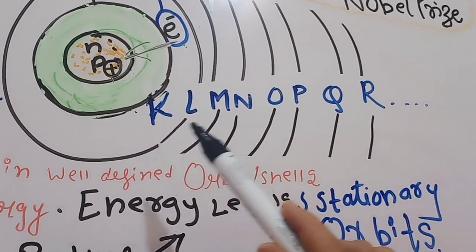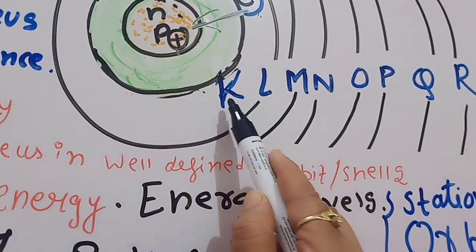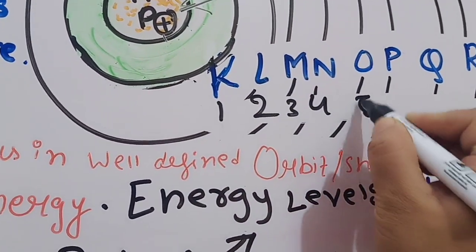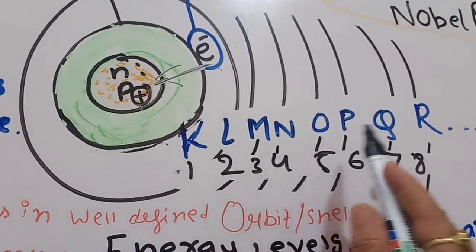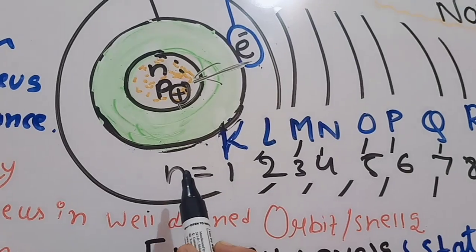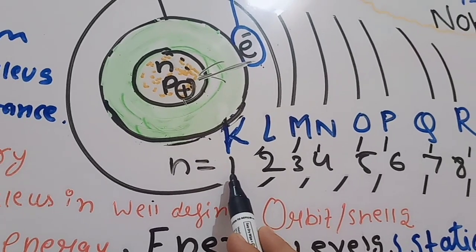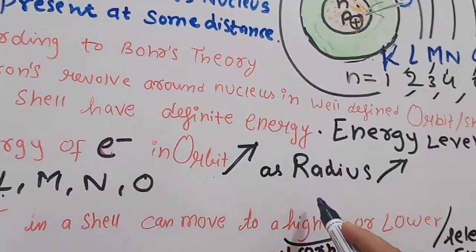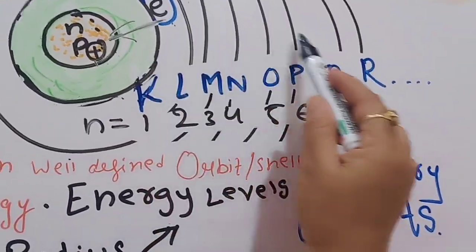The shells can go on increasing — K, L, M, N, O, P, Q, R and so on. We can also say that each shell is numbered: 1, 2, 3, 4, 5, 6, 7 and so on — the first shell, second shell, third shell, fourth shell, like that. This is defined by 'n,' which is the principal quantum number of the shell. n=1 means the first shell, n=2 is the second shell, and so on. The energy of the electron in an orbit increases as the radius increases.